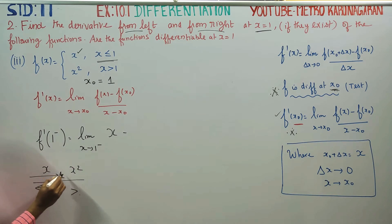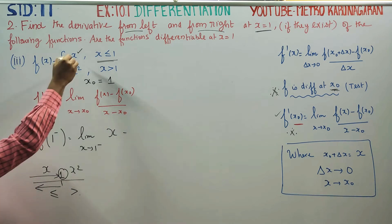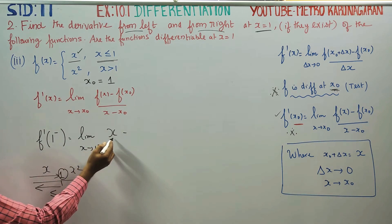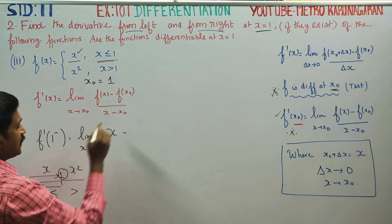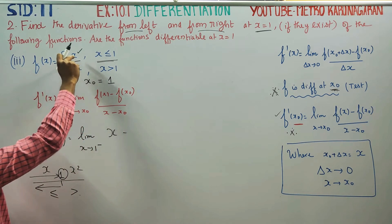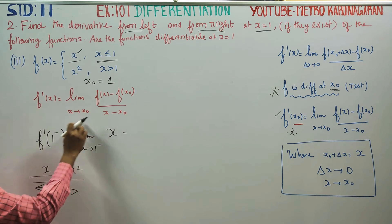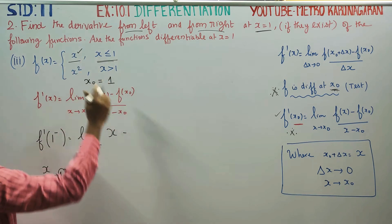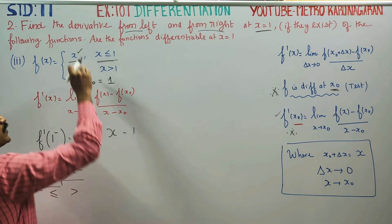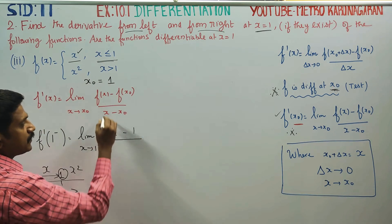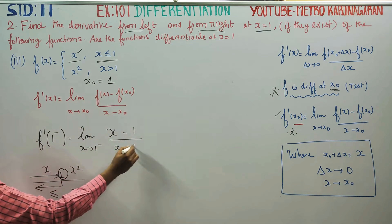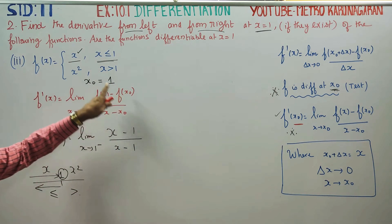We define the left-hand side function. We substitute x₀ into the formula: f(x) minus f(x₀), by x minus x₀. We substitute 1 here. x₀ is 1, so f(x₀) equals f(1), which equals 1. We operate the left hand side limit.